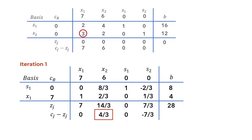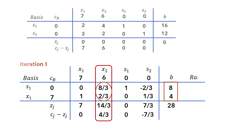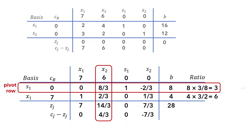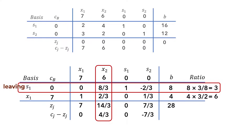The new pivot column again will be the one with the most positive net evaluation entry — the variable that will bring the greatest improvement to the objective function value, which is x2 in this case. To determine the pivot row, we divide the B column values by the positive pivot column values and select the row with the minimum ratio. 8 divided by 8/3 is 8 times 3/8, which gives 3. And 4 divided by 2/3 is 4 times 3/2, which gives 6. The minimum of the two ratios is 3, therefore the s1 row is the pivot row. If there is a tie in ratios, we choose the topmost one for consistency. s1 will be leaving the basis and x2 will be replacing it. 8/3 is the pivot element, at the intersection of the pivot row and pivot column.